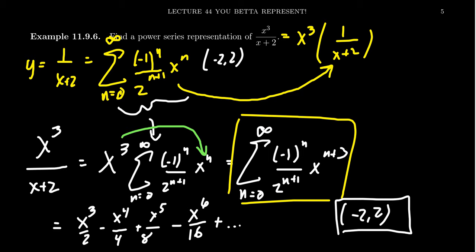What's kind of nice is when it comes to a rational function, if we want to find a power series representation, it turns out the numerator is somewhat irrelevant.